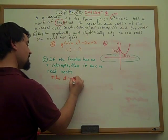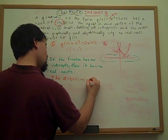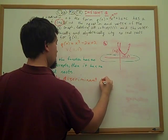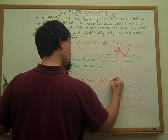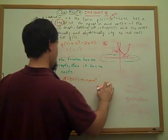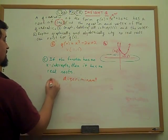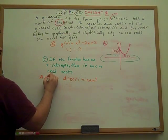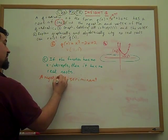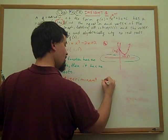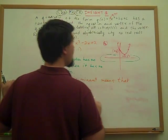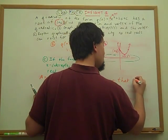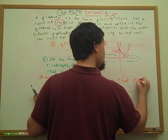The discriminant—let me go ahead and rephrase this—a negative discriminant means that there are no real roots.